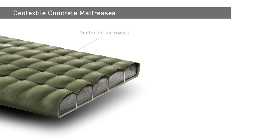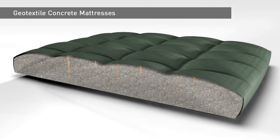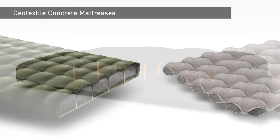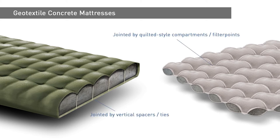The system comprises two basic components: a geotextile formwork unit and in-situ concrete. The formwork unit is filled with concrete to create a jointless, monolithic concrete slab. The formwork unit consists of two geotextile layers that are connected at regular intervals. The layers can be joined together either by vertical spacers or by forming quilted-style compartments.